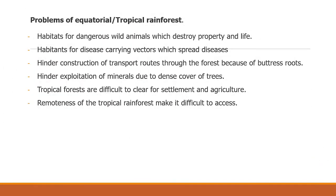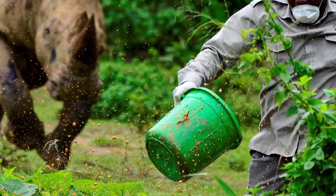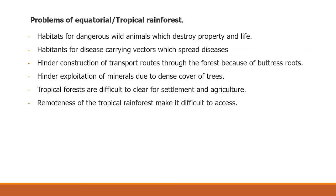Problems of equatorial or tropical rainforests. They are habitats for dangerous wild animals which destroy property and life. They are habitats for disease-carrying vectors which spread diseases. They hinder construction of transport routes through the forest because of buttress roots. They hinder exploitation of minerals due to dense cover of trees. They are difficult to clear for settlement and agriculture. The remoteness of tropical rainforests makes them difficult to access.